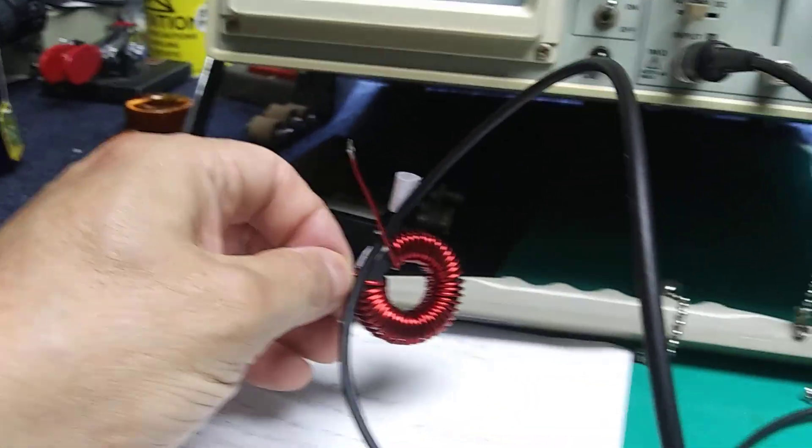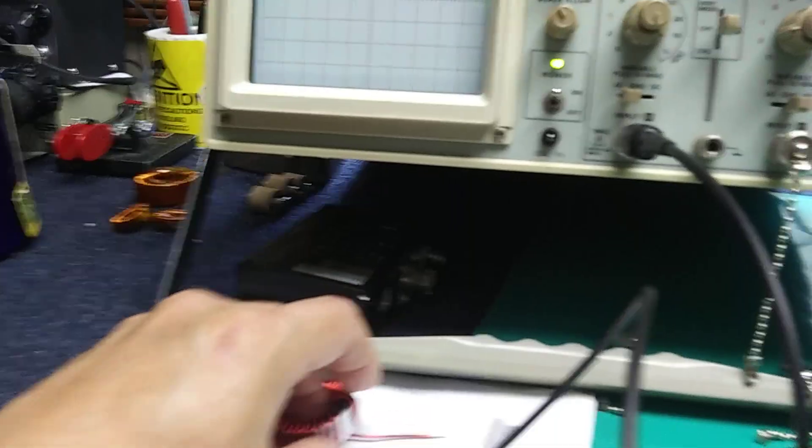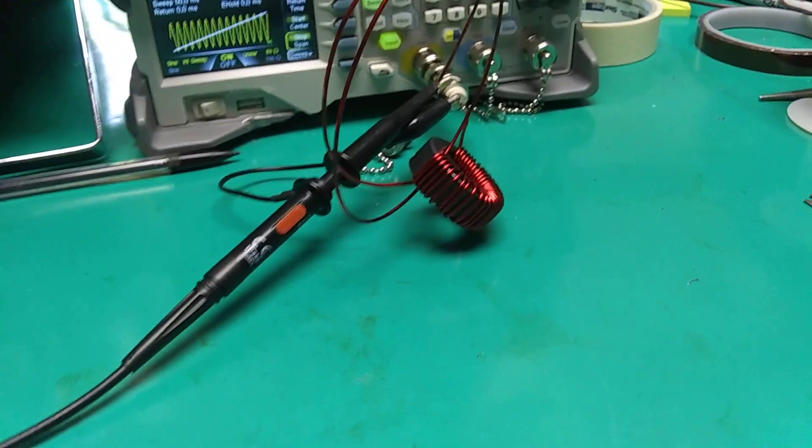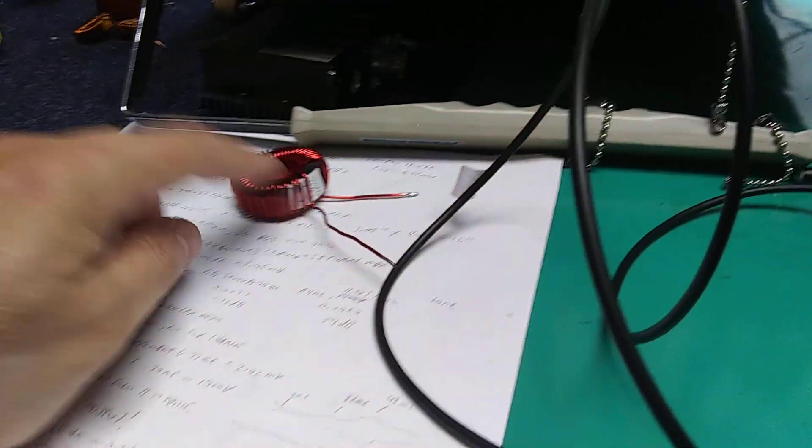So, the other choke I made has 42 turns. A little bit too much DC resistance. So, I'll use this one as a reference, count the number of turns, and unwind this one a few because all that inductance isn't needed.